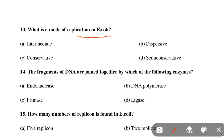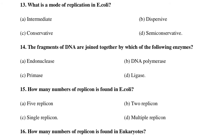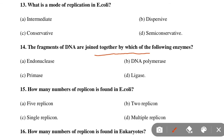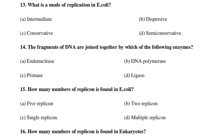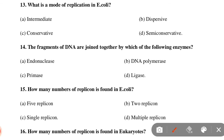Next MCQ: What is the mode of replication in E. coli? Option A: Intermediate, Option B: Dispersive, Option C: Conservative, Option D: Semi-conservative. Option D is correct — semi-conservative is the mode of replication in E. coli. Next MCQ: The fragments of DNA are joined together by which of the following enzymes — endonuclease, DNA polymerase, primase, or ligase? Ligase joins together the fragments of DNA.